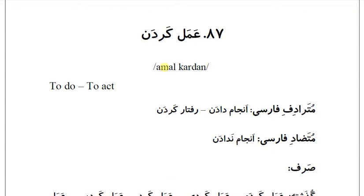Today I'm going to review the next verb, verb number 87. هشتاد و هشت — هشتاد و هشت means 87. عمل کردن.